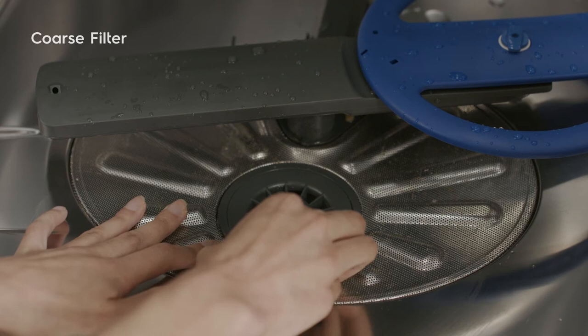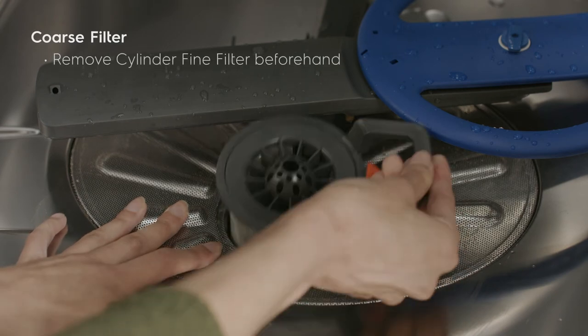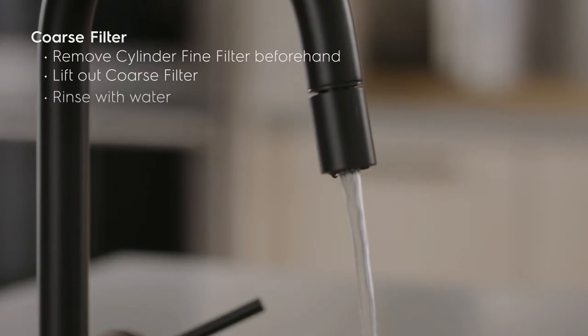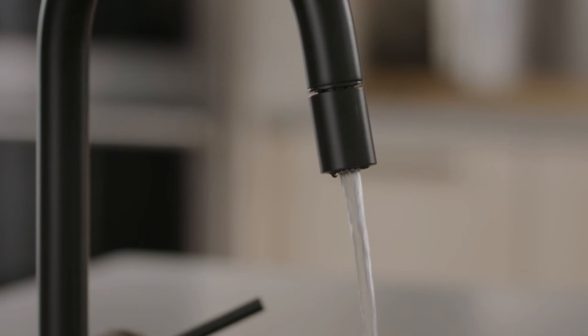To clean the coarse filter, take out the cylinder fine filter and remove the coarse filter from the dishwasher tub bottom. Flush the filter by holding it under running water and replace before replacing the fine filter.